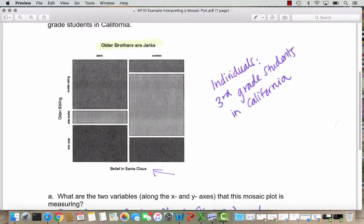The x-axis here is measuring belief in Santa Claus and we can see it's broken up into two possible answers whether the third graders have belief in Santa Claus or no belief in Santa Claus.